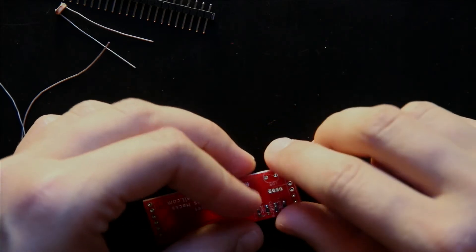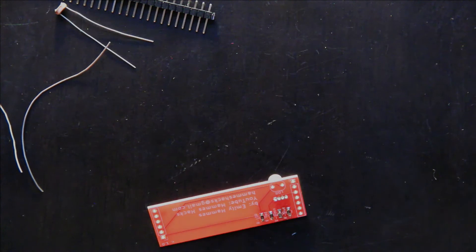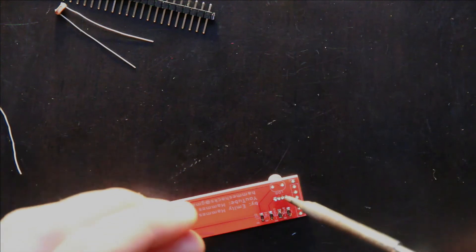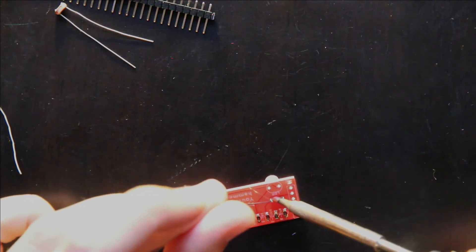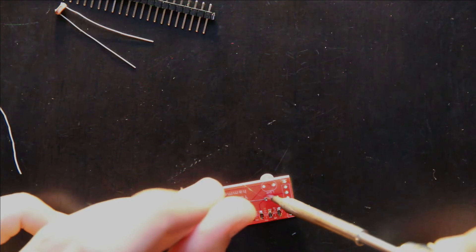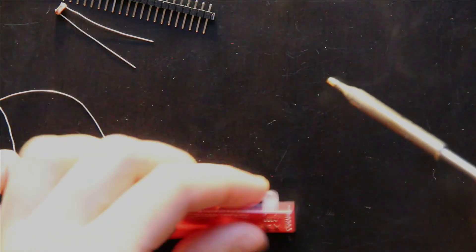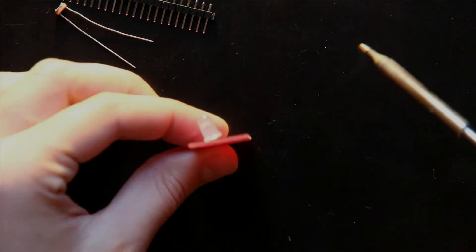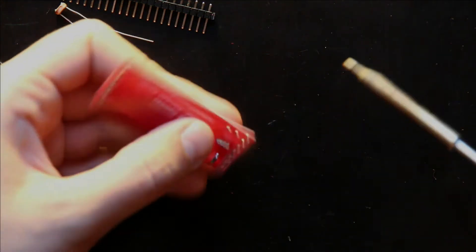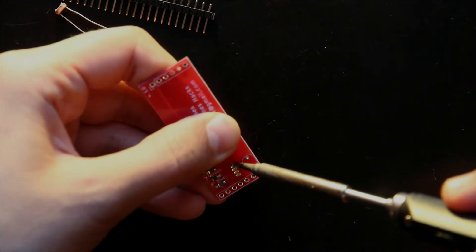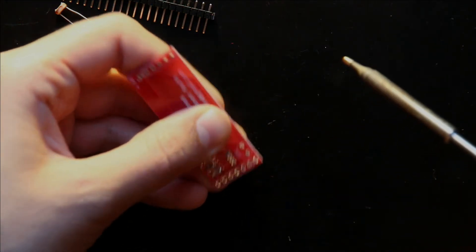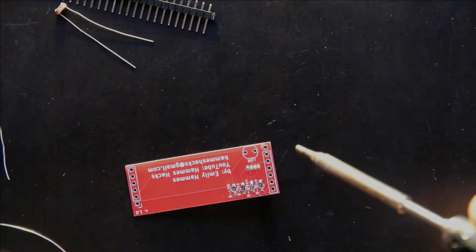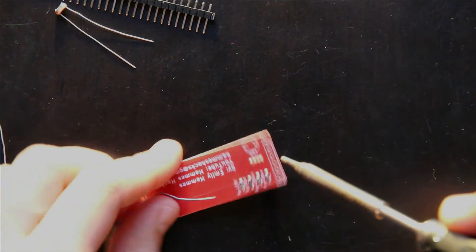And then we flip it over. And we just carefully solder one of those pins. And if we look at it, it's not perfectly flat on there. So we can fix that by holding it, re-melting the solder, and it'll pop right into place. And now that we have one pin soldered, we can go ahead and solder the rest of them easily.